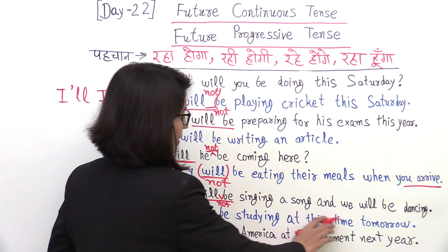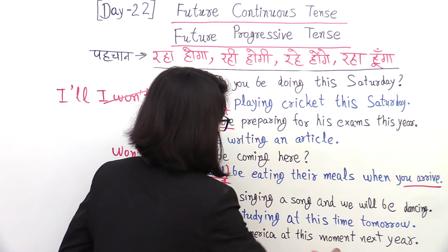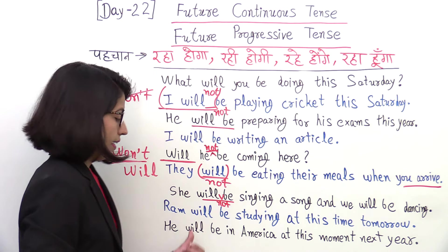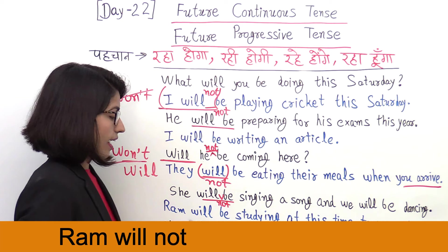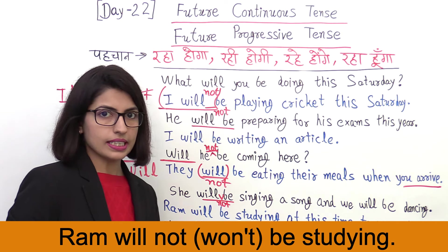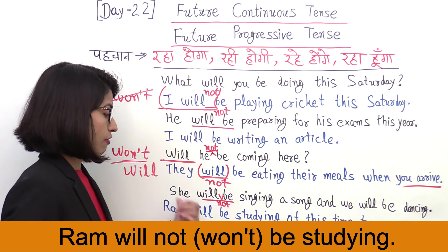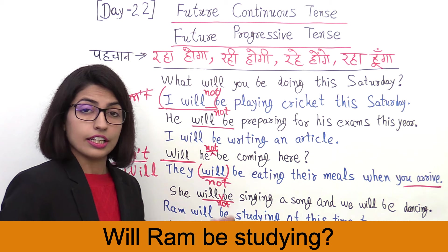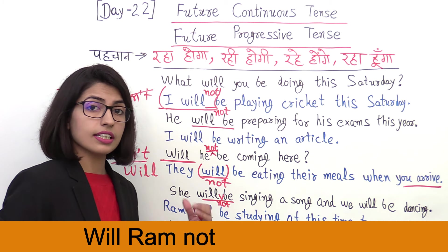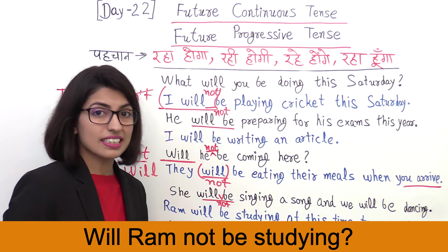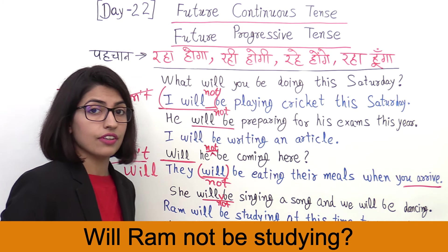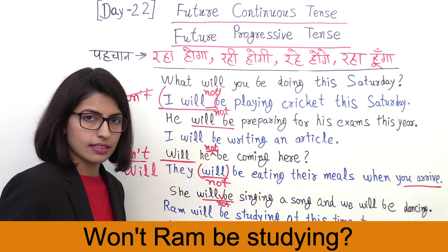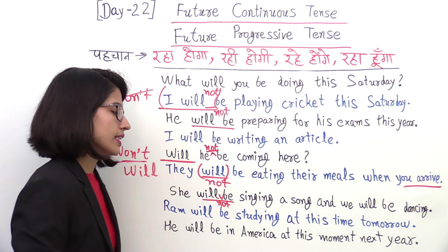Next: Ram will be studying at this time tomorrow. Negative: Ram will not be studying. Interrogative: Will Ram be studying? Interrogative negative: Will Ram not be studying? Or in contraction: Won't Ram be studying? I suggest you practice making sentences in every form — positive, negative, interrogative — to understand how all these sentences are formed.